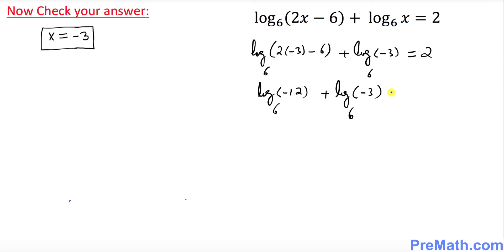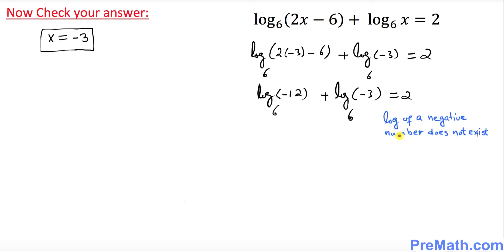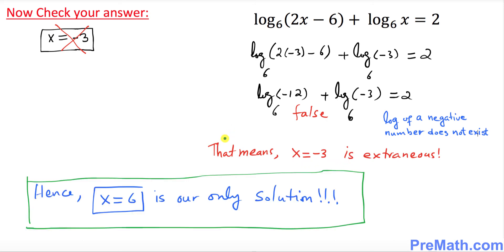But over here, as you see, the log of any negative number is impossible. The log of a negative number does not exist. That means this whole statement is false. So x equal to negative 3 is not our solution. Thus x equal to negative 3 is an extraneous solution. Hence x equal to 6 is our only solution. Thanks for watching and please subscribe to my channel for more exciting videos.